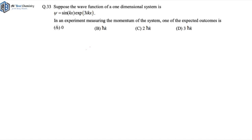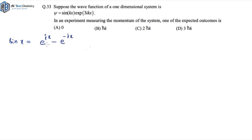To solve this question correctly, you need to know a particular conversion formula that converts your trigonometric function into exponential form. The formula is: sine(x) equals e^(ix) minus e^(−ix), all divided by 2i.